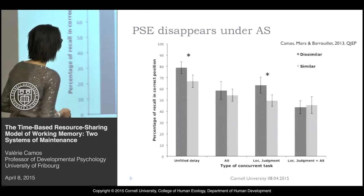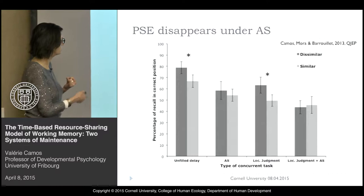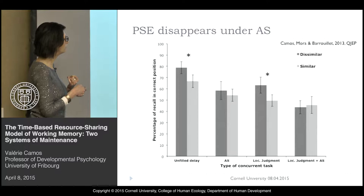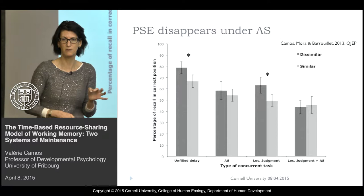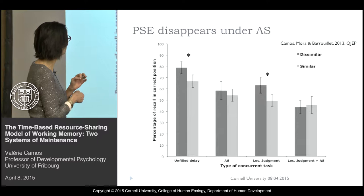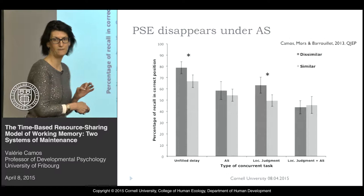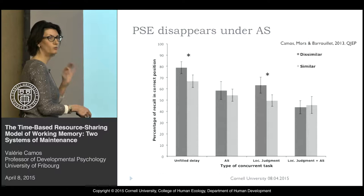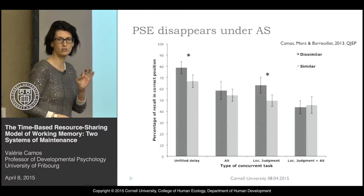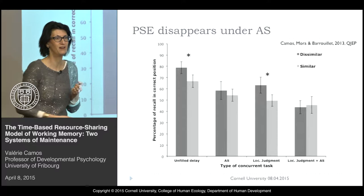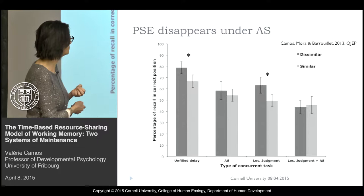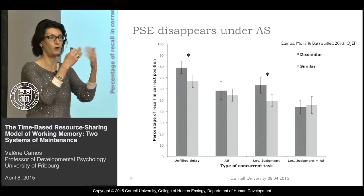What we see replicates the previous finding: both articulatory suppression and a concurrent task reduce recall performance. But the most interesting thing in this experiment is that the phonological similarity effect — the difference between dissimilar and similar words — occurs only when there was no articulatory suppression. When there is nothing to do, or even if they have something silent to do, you observe the phonological similarity effect. As soon as you introduce articulatory suppression, the phonological similarity effect disappears. But it disappears independently — you still have an effect of attentional demand, which fits with the idea that you have two systems that are independent.